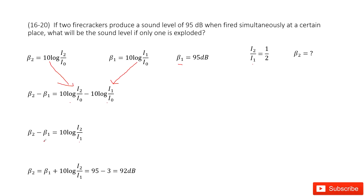In this function, beta 1 is given, and the ratio is given. So you just input all the known quantities to get the answer. Thank you.